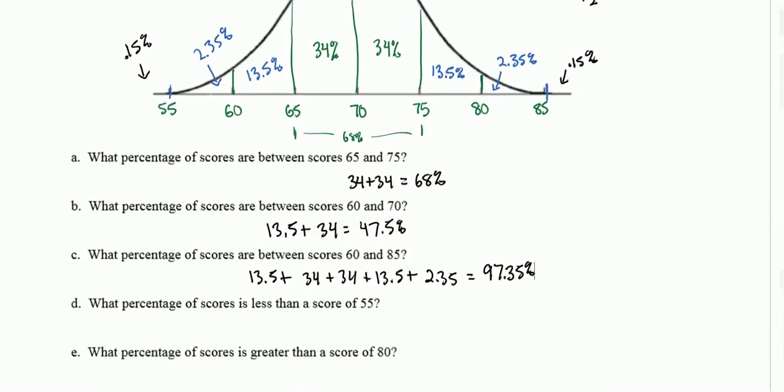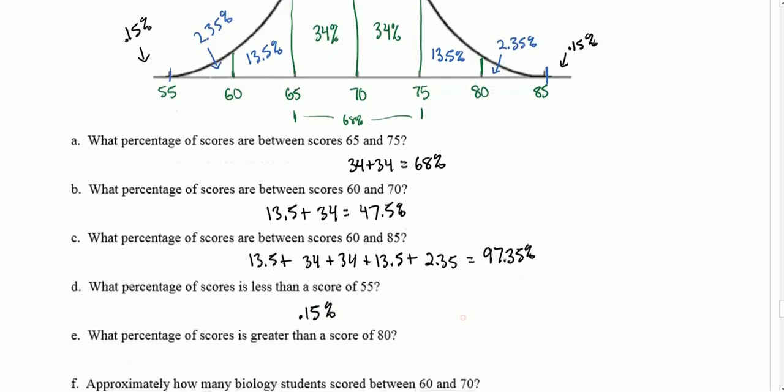What percent are less than 55? 0.15%. What percent are greater than 80? That would be 2.35 plus 0.15, which is 2.5%.